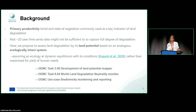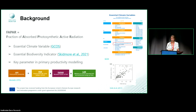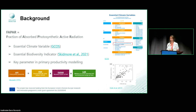This research feeds into several OEMC tasks: it can be part of the land potential mapper, the land degradation neutrality monitor, and also the biodiversity monitoring and reporting use case. What we use here as an indicator for primary productivity is FAPAR — the fraction of absorbed photosynthetically active radiation. It's one of the essential climate variables, it can be related to biodiversity, and it plays a key role in primary productivity modeling, such as the light use efficiency equation used to estimate GPP.